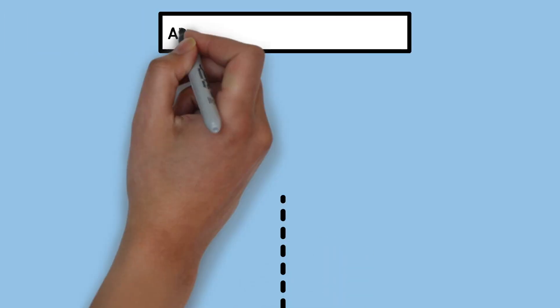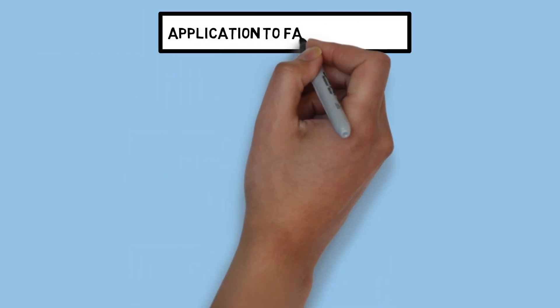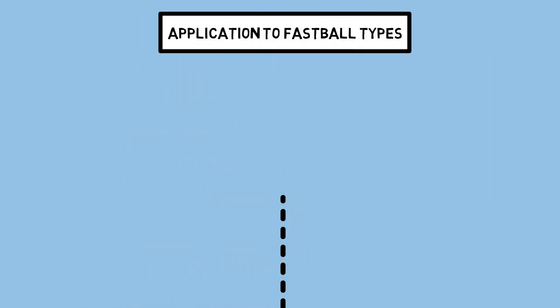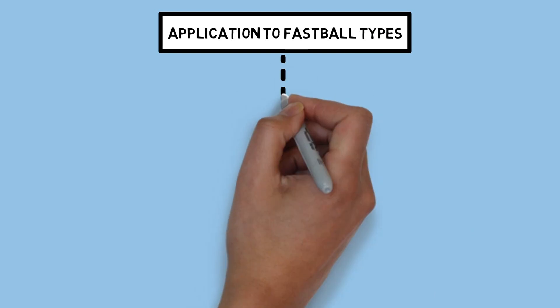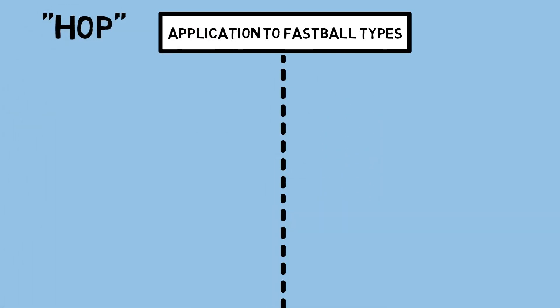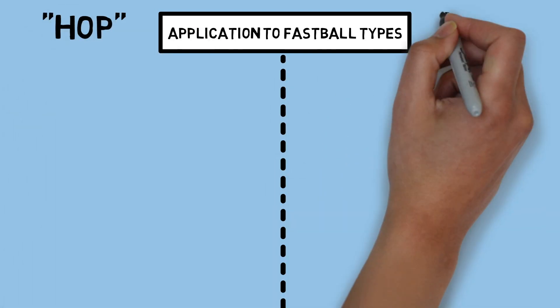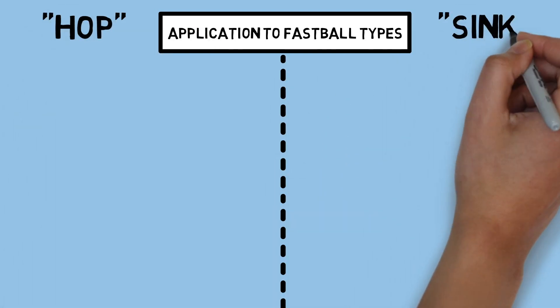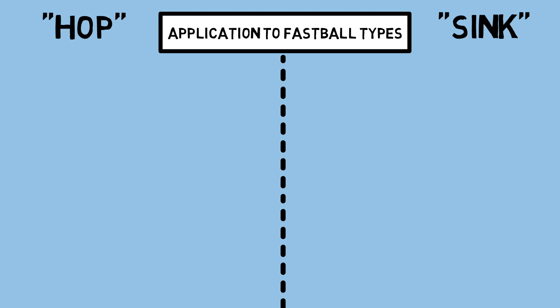Now let's hop over to how this can actually be applied to pitching. When talking about fastballs, you'll typically have pitches that fall into two major categories: the first being fastballs with hop, and the second being fastballs with sink. Let's cover how the metrics we talked about differ from one another when talking about hop and sink.